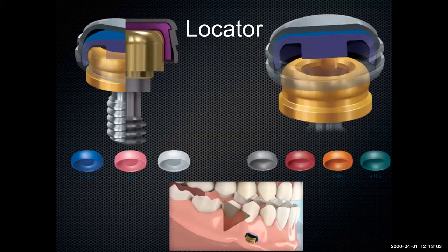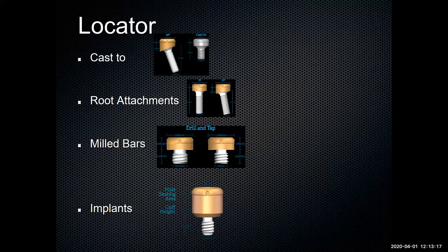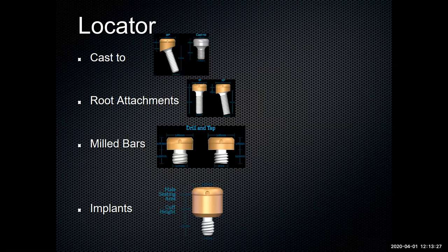Let's look at some attachment choices on the market. Probably one of the most popular attachment systems are the locator attachments — they work really well, they're consistent, they do the job. There are many different kinds and options, including cast, root attachments, mill bars, and implants. ERA attachments are still very popular. There are many attachment systems, including options that screw right into a mill bar.